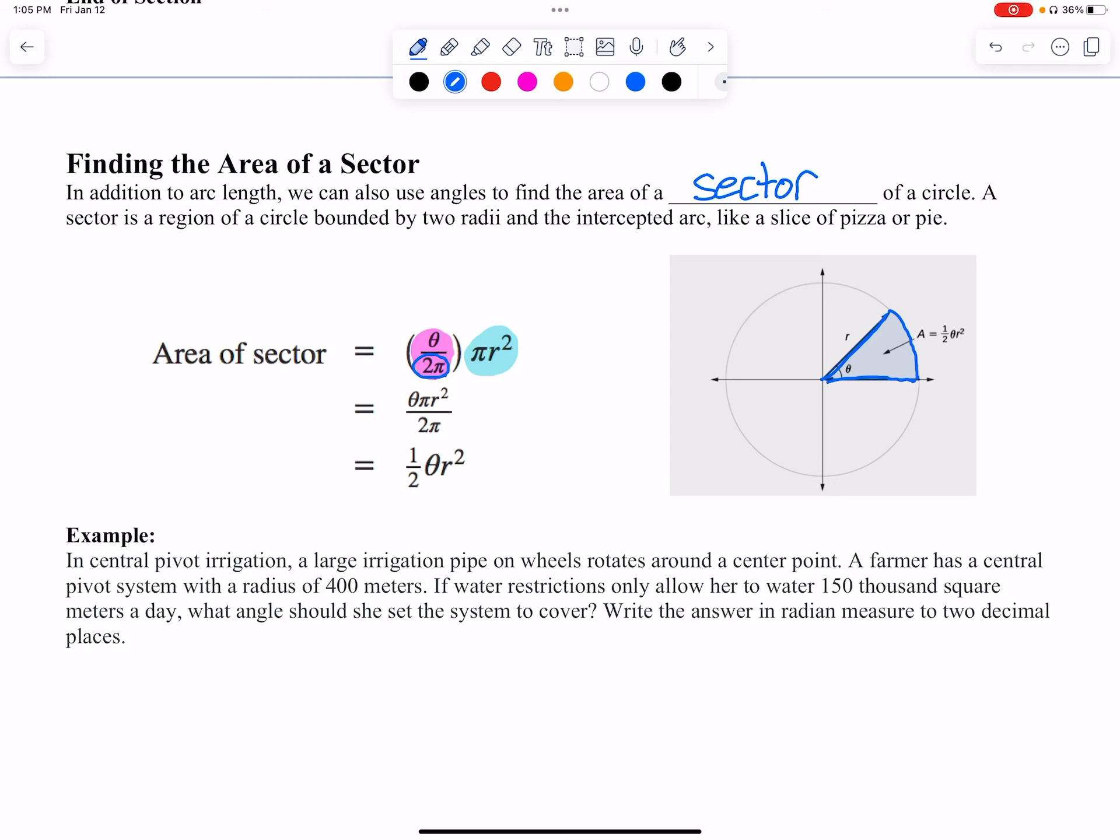The 2π on the bottom—remember, 2π is all the way around—so that would give me, if I just did 2π over 2π, then I would get the whole circle, right?